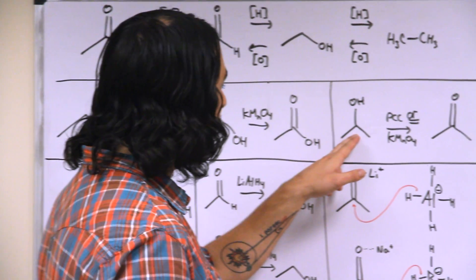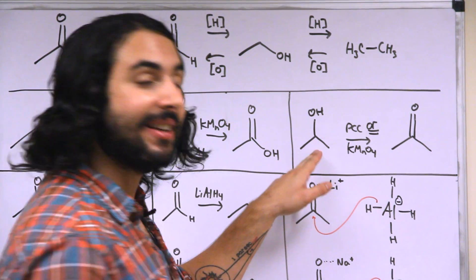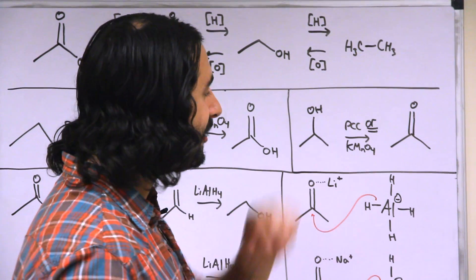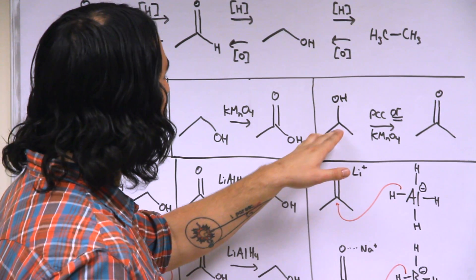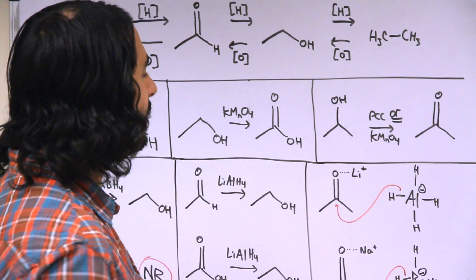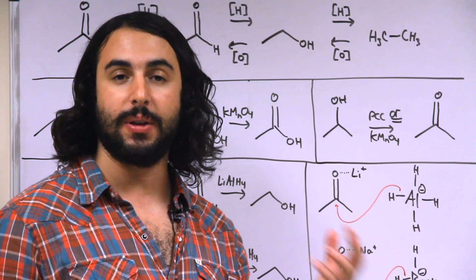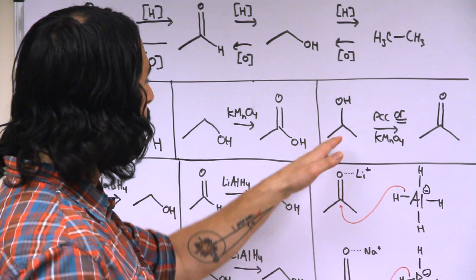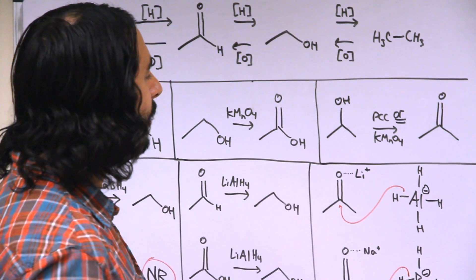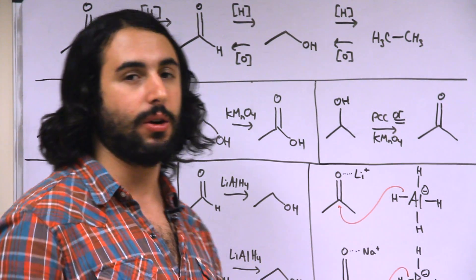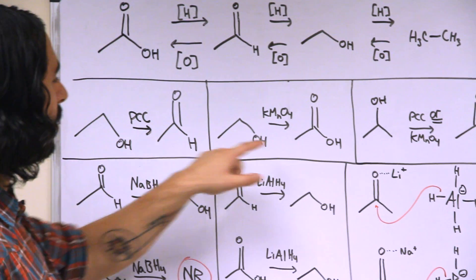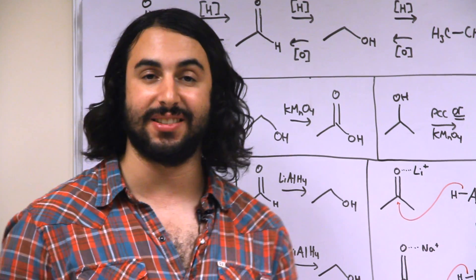Now a secondary alcohol can only be oxidized to the ketone functional group level because we cannot oxidize any further. There's only one additional bond to hydrogen that can be replaced with another bond to oxygen. We're not going to break any of these carbon-carbon bonds. So for a secondary alcohol, it doesn't matter which we're going to use, we're just going to get a ketone. So it's mainly for these primary alcohols where we're going to have to make a decision.